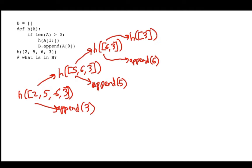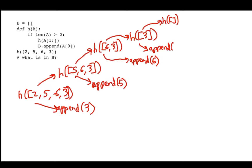Now for H of [3]: the length of A is one, so I do this one more time. If I slice from position one on, I get an empty list. So I call H with the empty list one last time, and then I do my append — appending A[0], which is 3. When I call H on the empty list, the length of A is zero, so none of the recursive code happens — it doesn't do anything.